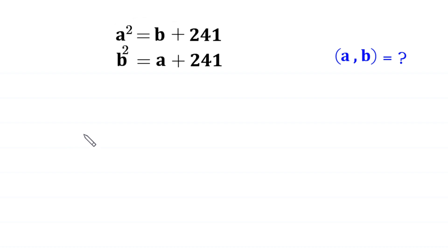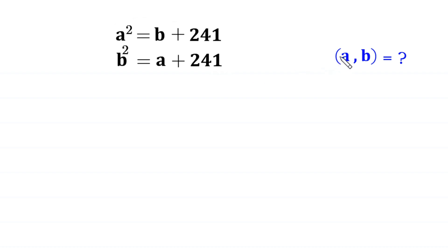Hello everyone, you are welcome to how to solve this very nice system of equations. A squared is equal to b plus 241 and b squared is equal to a plus 241. Our job is to find all possible values of a and b. So, let us start.